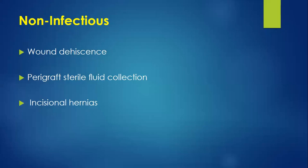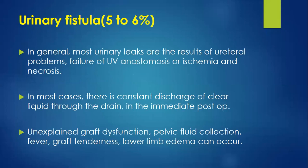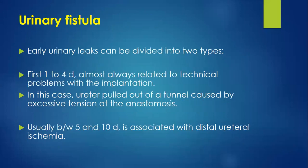Urinary fistula has an incidence of 5 to 6%. Urinary leak most commonly results from ureteric problems — failure of vesicoureteric anastomosis, or ischemia or necrosis. Most cases show constant discharge of clear liquid through the drain in the immediate post-operative period. Other presentations include unexplained graft dysfunction, pelvic fluid collection, fever, graft tenderness, and lower limb edema. Early leaks in the first four days are almost always related to technical problems — the ureter pulled out of the tunnel due to excess tension or distal ureteric ischemia between 5 to 10 days.